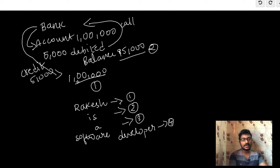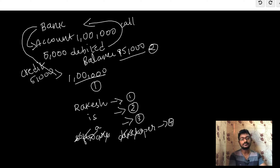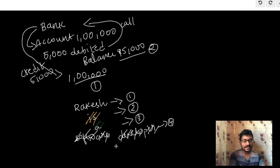Now we do undo. If we undo, we move from the fourth state back to the third state. Then we delete the content and undo again, moving back to the second state. This is the other example of Memento Design Pattern — undo or rollback.